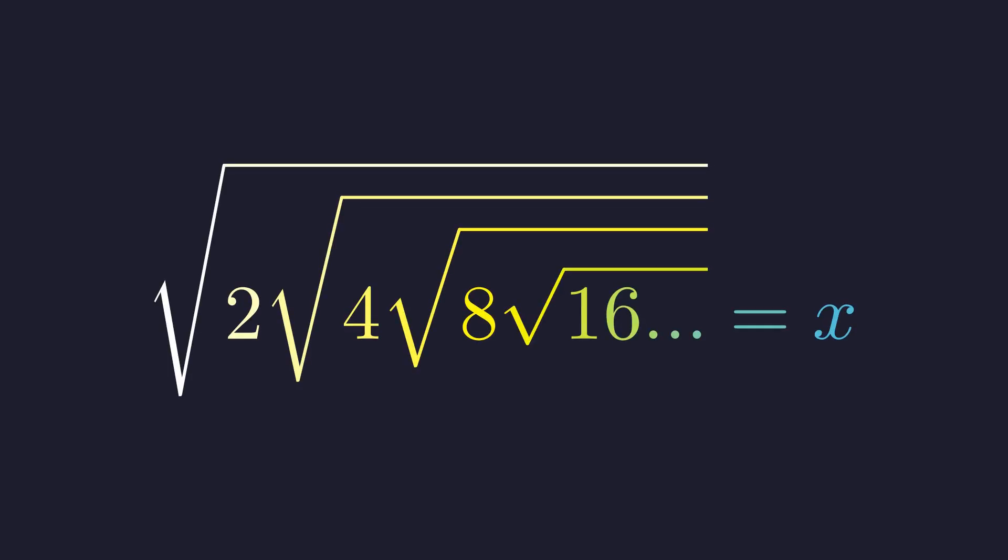Here's a really beautiful infinite nested radical. We want to find what value x this converges to, assuming it converges at all.